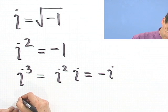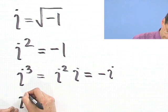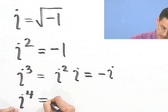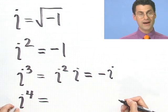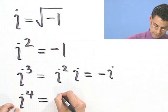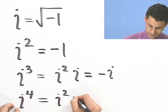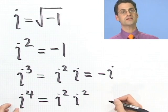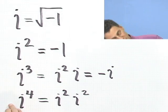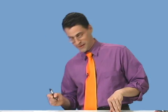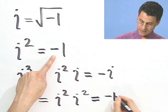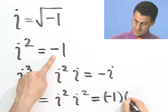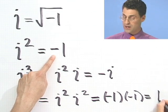What about i to the fourth? i to the fourth would be i squared times i squared. And notice that this is just minus 1 times minus 1, and that equals 1.